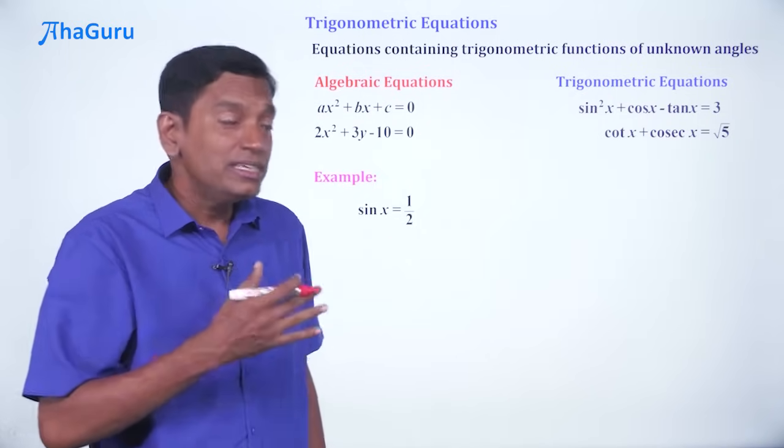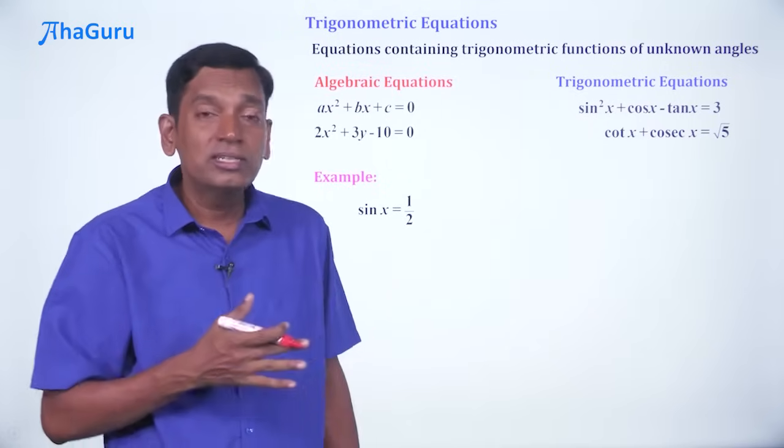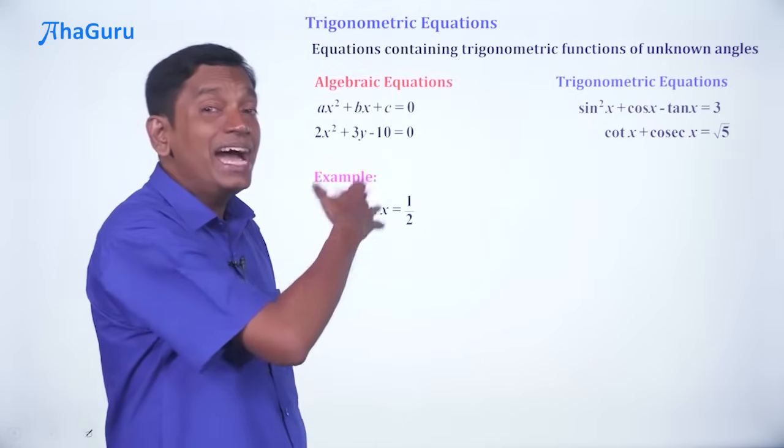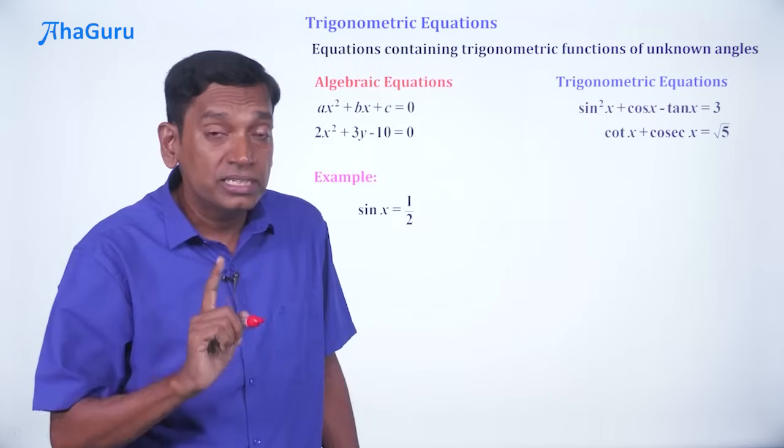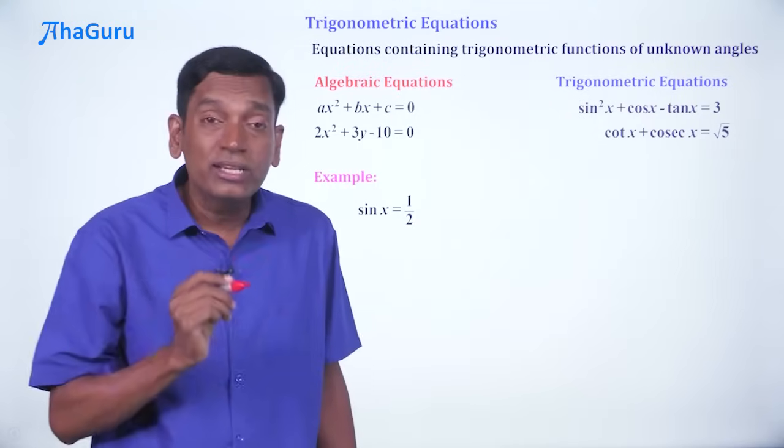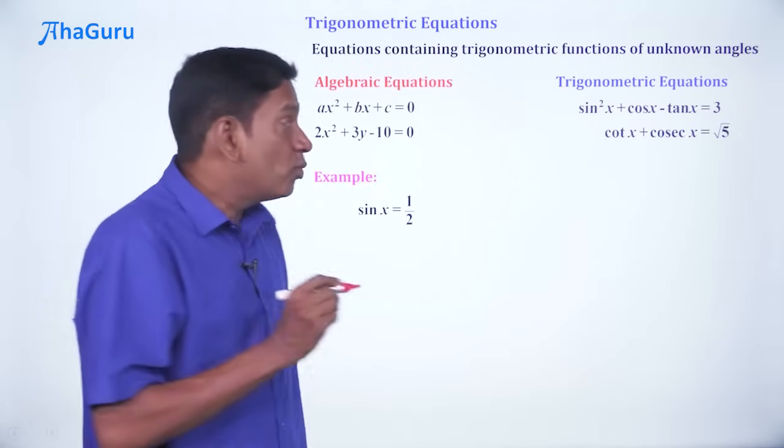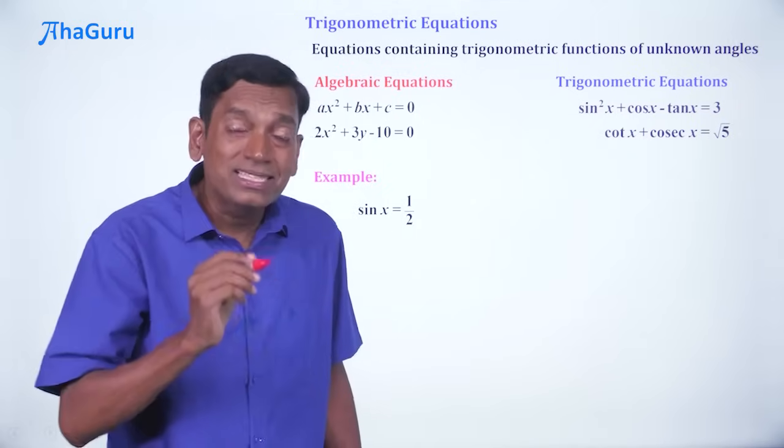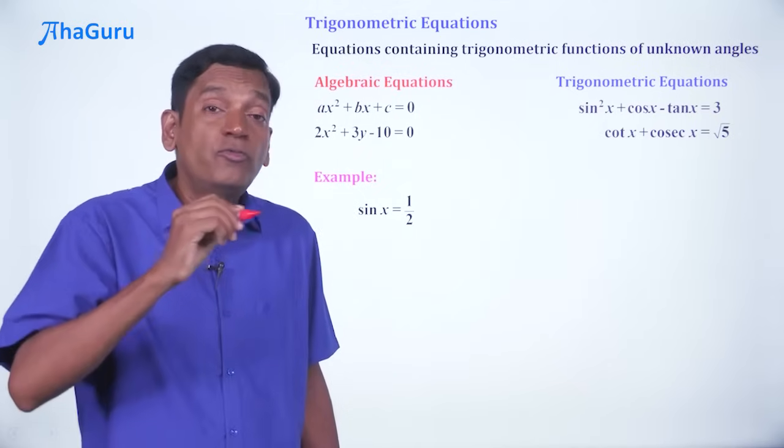We are going to consider sin x = 1/2. Now, some of you may think this is already a solution. This does not look like an equation. This looks like the answer to the equation, but that is not correct. Remember, in an equation, you are trying to solve for the unknown. What is the unknown in this? x is the unknown. So you have to solve for x.